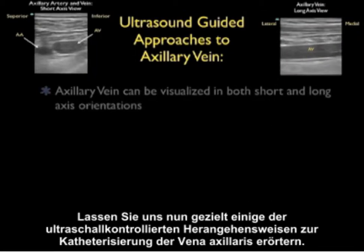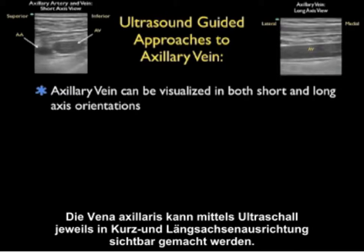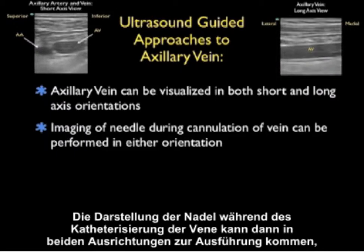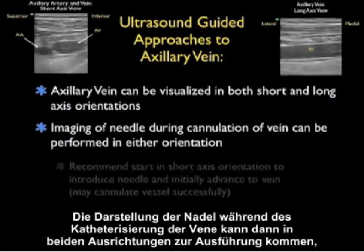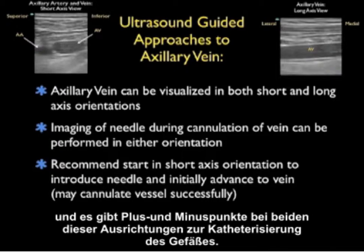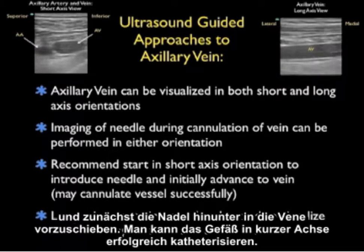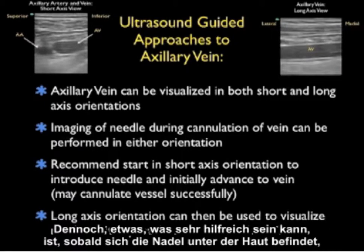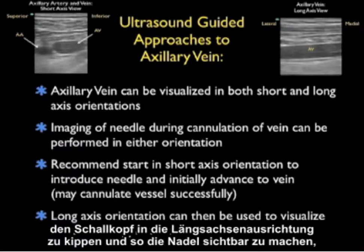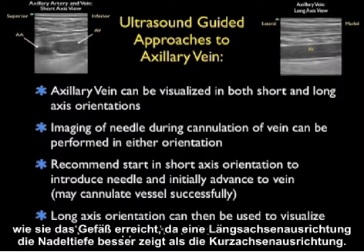Now let's discuss the ultrasound-guided approaches to axillary vein cannulation. The axillary vein can be visualized in both short and long axis orientations, and imaging of the needle can be performed in either. I generally recommend starting in a short axis orientation to introduce the needle and advance it down to the vein. One may successfully cannulate in short axis; however, flipping the probe into the long axis orientation once the needle is under the skin can be very helpful, as the long axis orientation shows needle depth better than short axis.